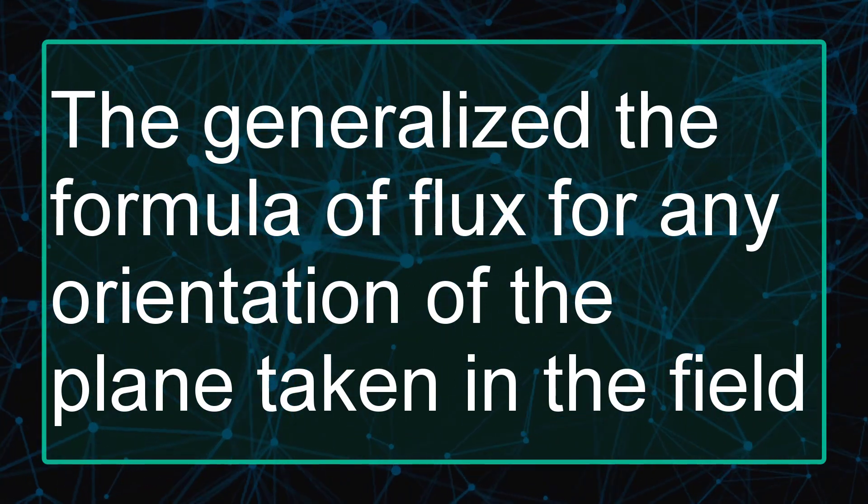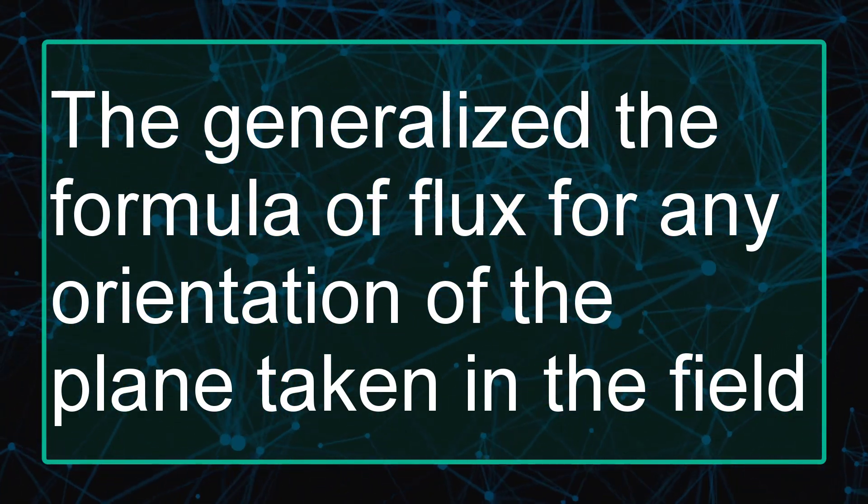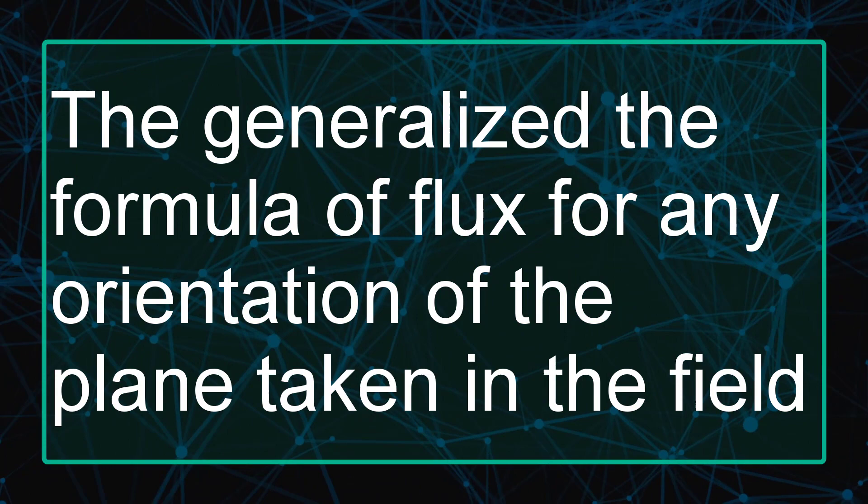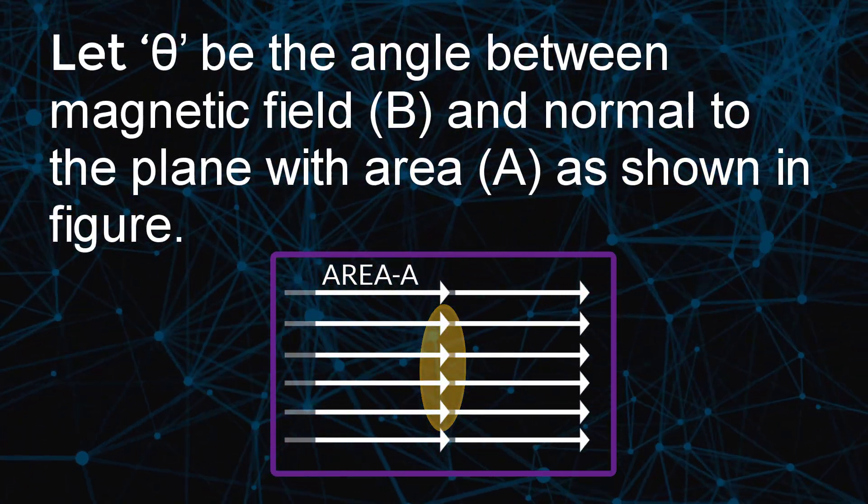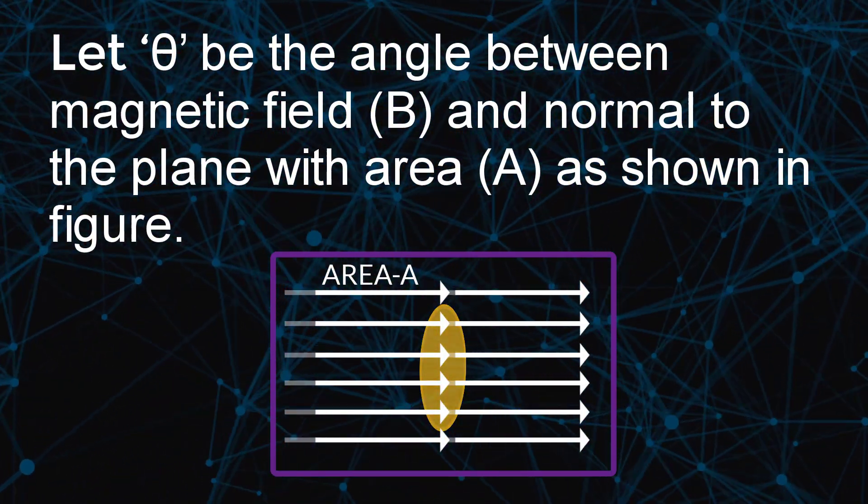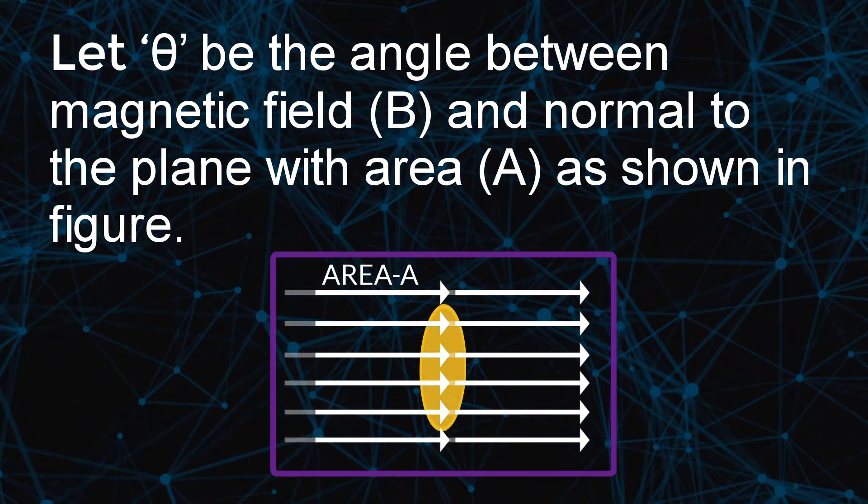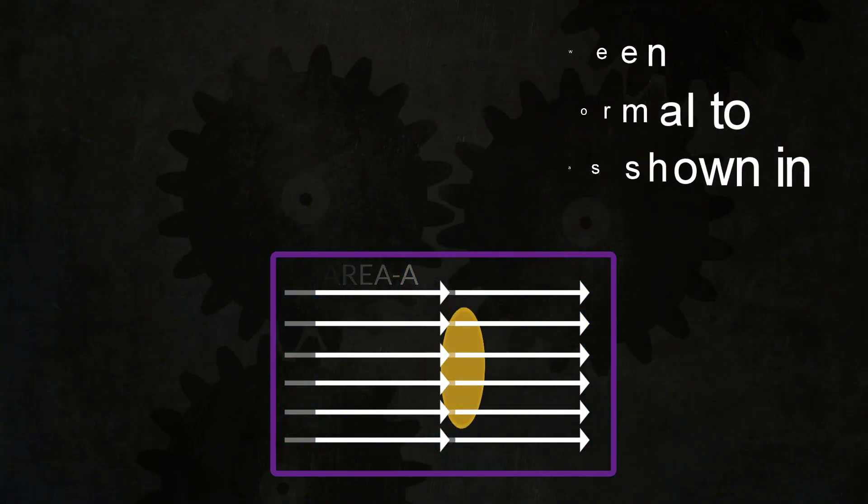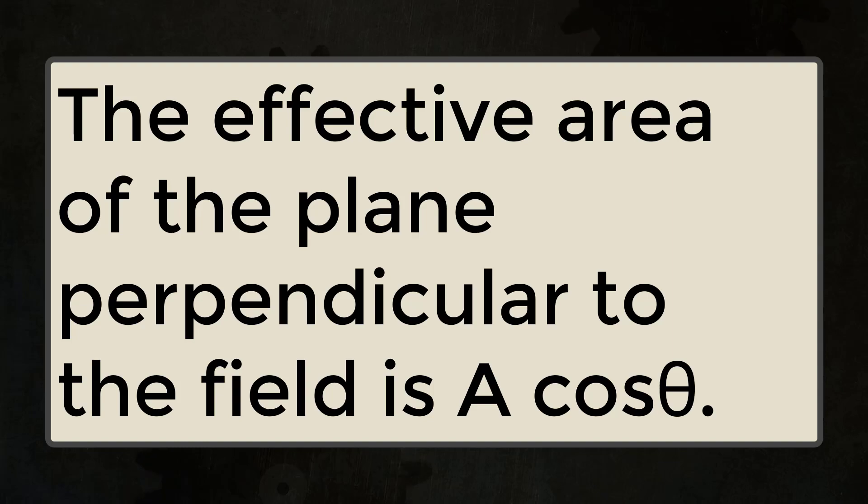The generalized formula of flux for any orientation of the plane taken in the field. Let theta be the angle between magnetic field B and normal to the plane with area A as shown in the figure. The effective area of the plane perpendicular to the field is A cos theta.